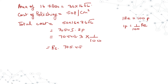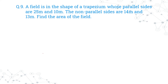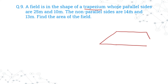Now, the last question of Chapter 12 — Heron's Formula. Question 9: A field is in the shape of a trapezium. A trapezium is a quadrilateral which has two parallel sides and two non-parallel sides. The parallel sides are 25 m and 10 m, and the non-parallel sides are 14 m and 13 m.